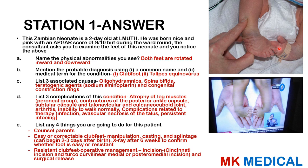Both feet are rotated inwards and downwards. This is what we refer to as club foot or clubbed foot, and the scientific name is talipes equinovarus. The associated causes include oligohydramnios, spina bifida, teratogenic agents such as sodium valproate, and congenital constriction rings. Three complications may include atrophy of the leg muscles, most commonly in the peroneal group; contractures of the posterior ankle capsule, subtalar capsule, talonavicular, as well as the calcaneocuboid joint; osteoarthritis later on; inability to walk normally; and complications related to therapy such as infections from surgery, avascular necrosis of the talus, as well as persistent in-toeing.